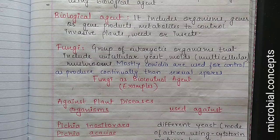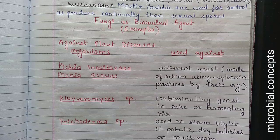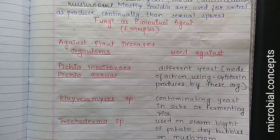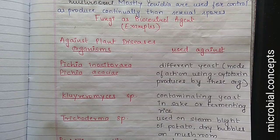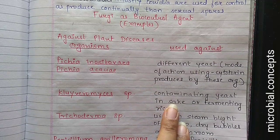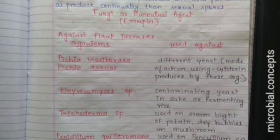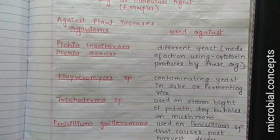These are some fungi which work actively against plant diseases. Pichia inositora or Pichia acacia are used against different yeasts, with the mode of action being cytotoxin production. Kluyveromyces species is used against contaminating yeast in sake — an alcoholic beverage — or in fermenting rice. Trichoderma species is used against the causative agent for stem blight on potato and dry bubble disease on mushrooms.